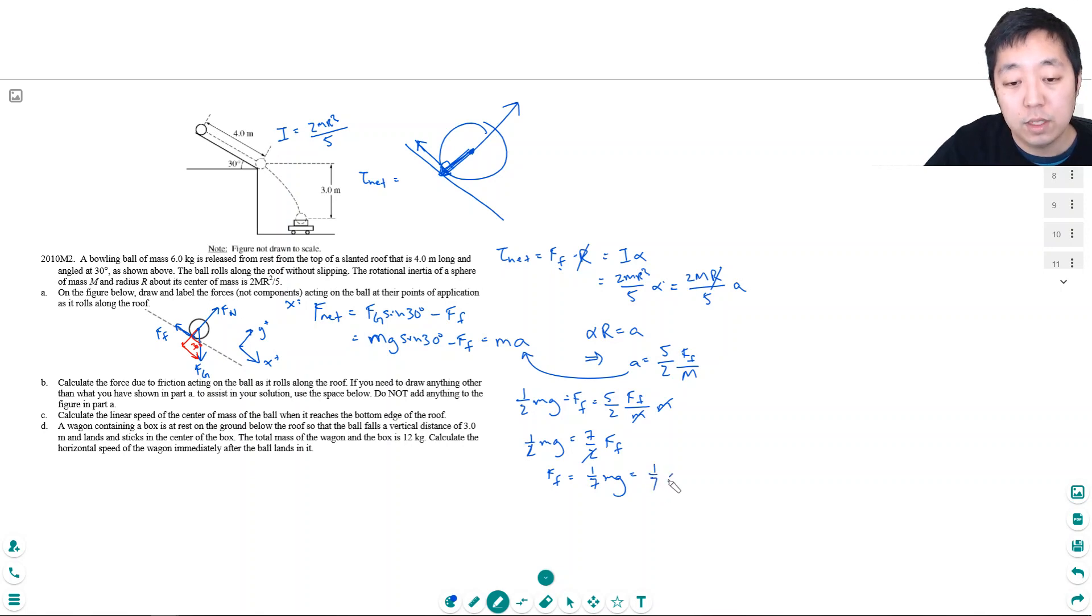That's 1 seventh times M is 6 kilograms. And G is 9.8 meters per second squared. So, the force of friction is 9.8 times 6 divided by 7. 8.4 Newtons.